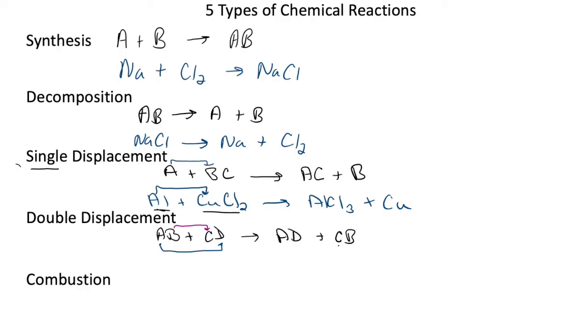And this is why I wrote C first in the second compound of the products, because the C is the metal in the second compound in the reactants. And we know that metals are generally written before the non-metals. An example of a double displacement would be sodium chloride plus calcium sulfate.